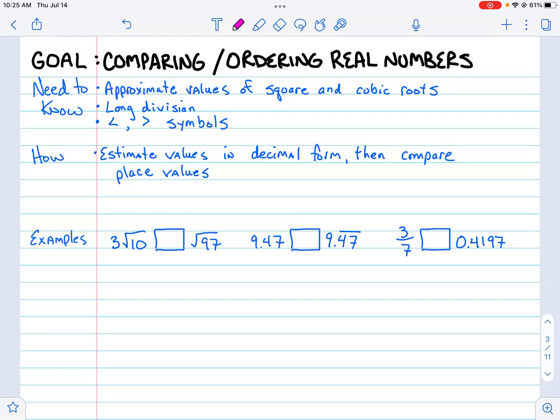Often you'll be asked to compare or put in order from smallest to biggest real numbers, and real numbers come in a variety of forms. A few things you need to know: you're going to need to be able to estimate or approximate square and cubic roots, you're going to need to know how to use long division...